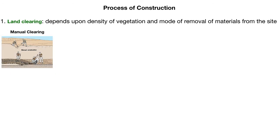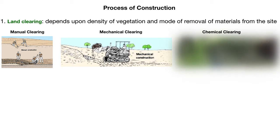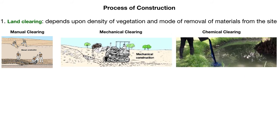The second method is mechanical clearing. If the density of vegetation is thick and complex — with big boulders, deep-rooted trees, lots of undulations, and big ditches — then mechanical equipment like scrapers, bulldozers, or other earth-moving equipment are engaged to clear the site. The third method is chemical clearing: if the soil contains harmful bacteria or microorganisms harmful to aquatic animals, chemicals are mixed into the soil to kill these harmful bacteria.